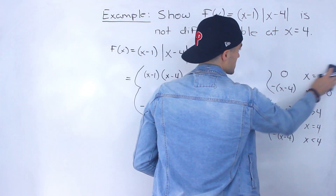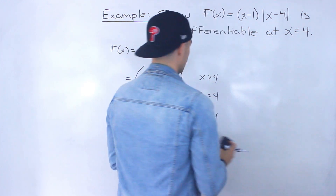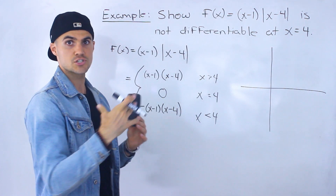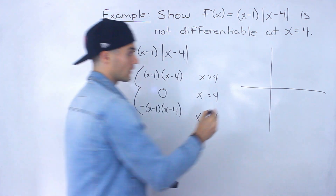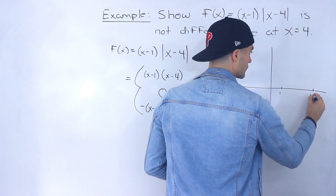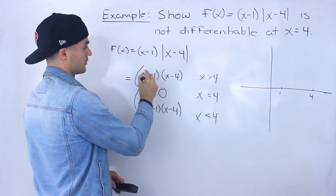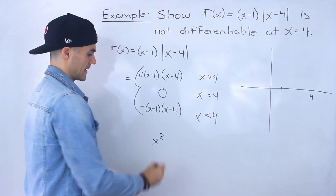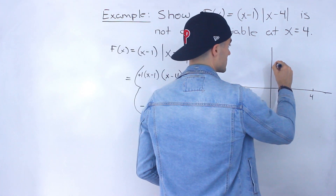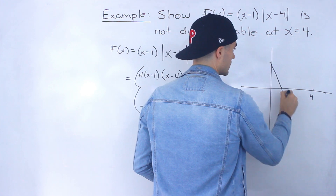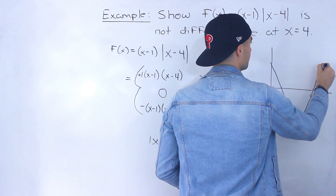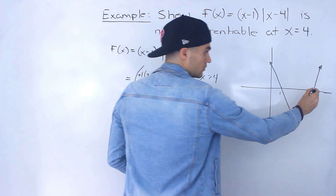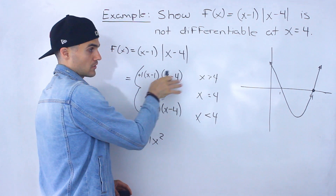Now we can graph this. Let's first graph x minus 1 times x minus 4 — that's just a parabola with x-intercepts at 1 and 4. Let's mark 1 and 4 on the x-axis. Since expanding gives a positive x-squared term, this parabola opens upward. And at x equals 4, the y-value is 0, which is one of the intercepts.